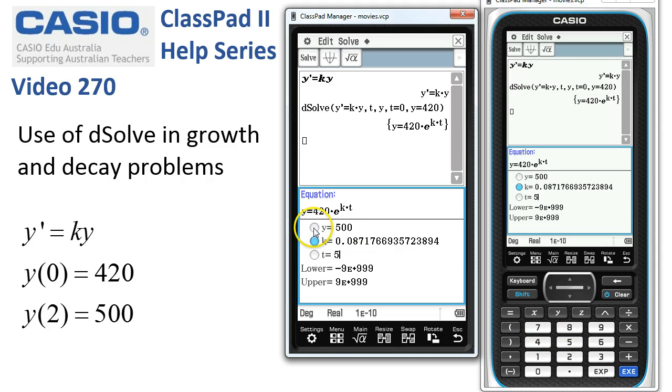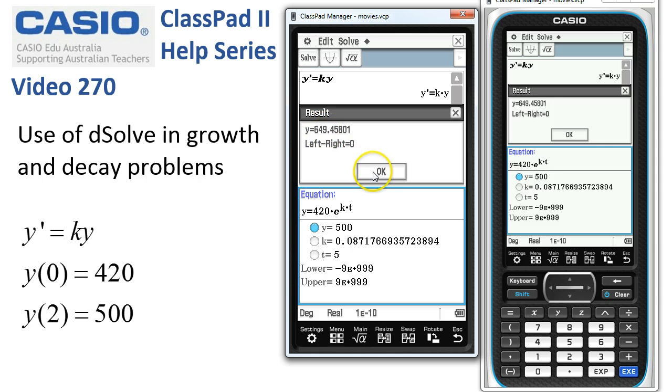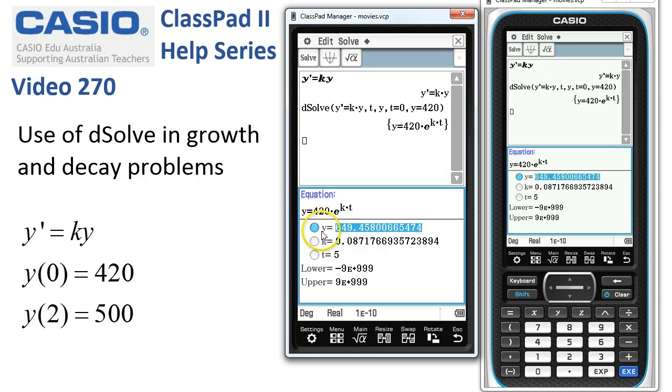The population that comes out at 649. If we wanted to know how long it's going to take for our population to increase to a thousand, say, we could put in a thousand here and solve for t.